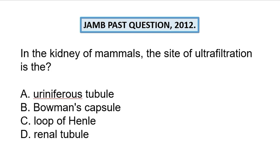Hello guys, welcome to today's dose of young biology past question, year 2012. The question says: in the kidney of mammals, the site of ultra filtration is — A) uriniferous tubule, B) Bowman's capsule, C) loop of Henle, and D) the renal tubule.